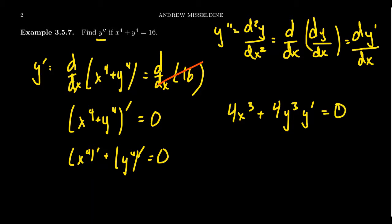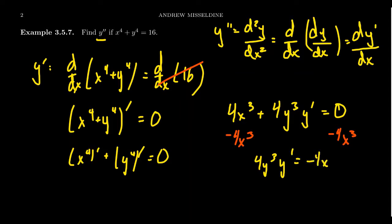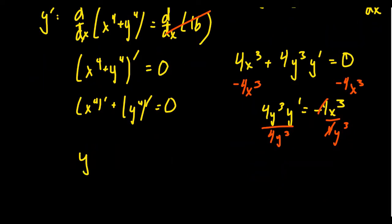To find the second derivative, we could take the derivative right now, but it will be more productive to solve for y prime first. Subtracting 4x cubed from both sides gives 4y cubed times y prime equals negative 4x cubed. Dividing both sides by 4y cubed — the 4 cancels — we see that y prime equals negative x cubed over y cubed. That's a clean first derivative.